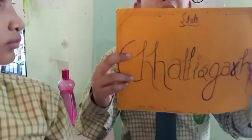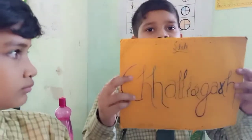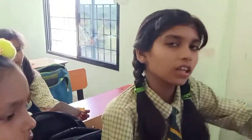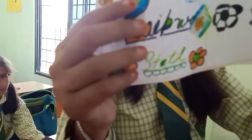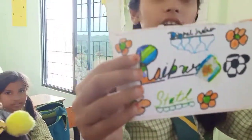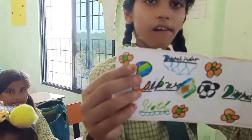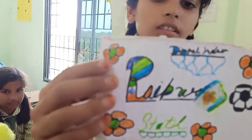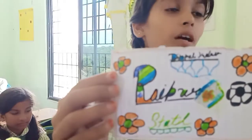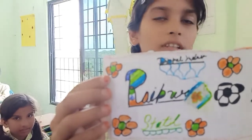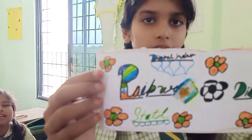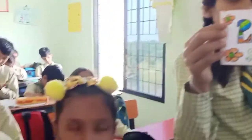The state name is Chhattisgarh. Yes, the capital name of Chhattisgarh is Raipur. The capital is Raipur.